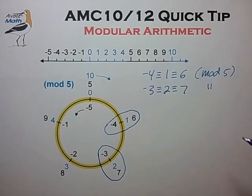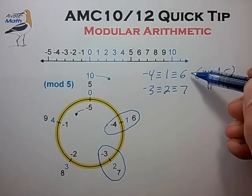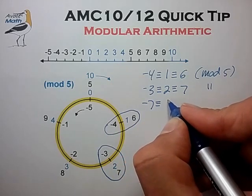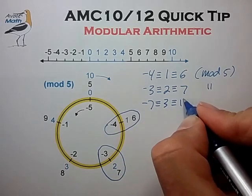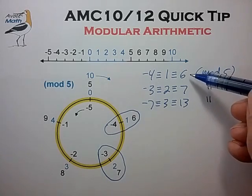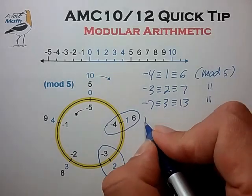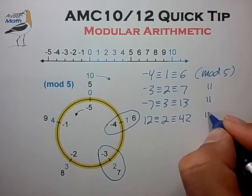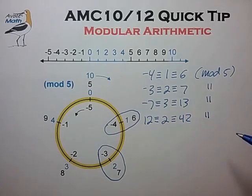Second example, we say that minus 3 is congruent to 2 is congruent to 7 in modulus 5. Now we can do something interesting by adding these two equations together to find minus 7 congruent to 3 congruent to 13, again in modulus 5. And interestingly, this is a valid congruence. This is a true statement. Similarly, we can multiply these two equations to arrive at 12 congruent to 2 congruent to 42, again in modulus 5. And this also is a valid true congruence.